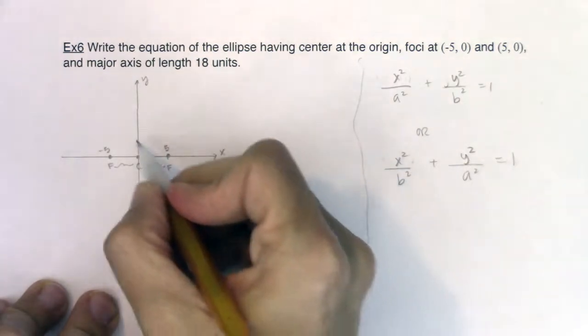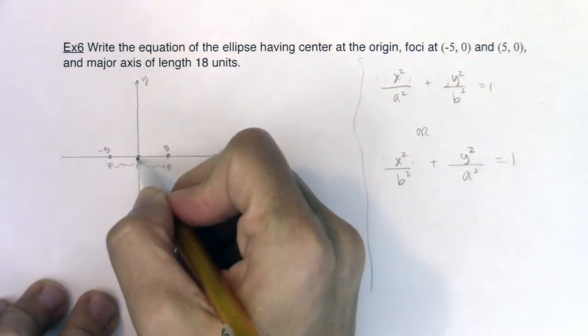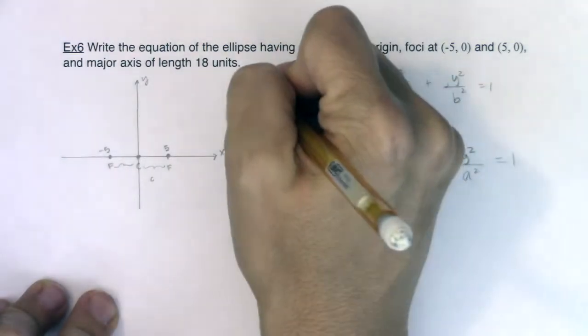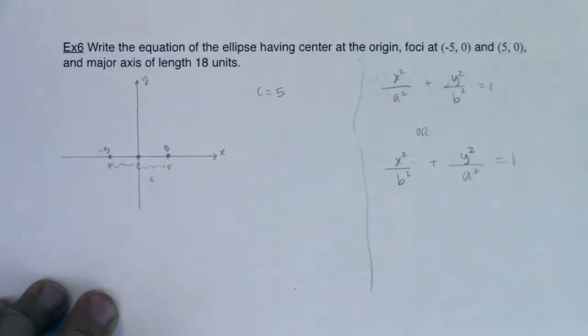So in this case, since I'm going from (0, 0), the origin, to (5, 0) or (0, 0) to (-5, 0), I can see that c is equal to 5. So I'm picking up on that.